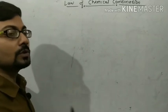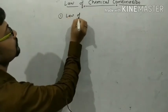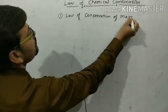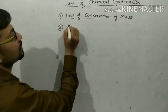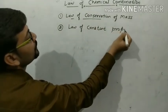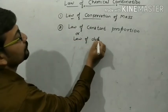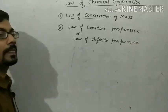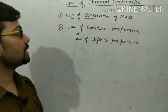So, what is the law of chemical combination? According to your syllabus, there are two laws under the law of chemical combination. The first one is the Law of Conservation of Mass, and the second law is the Law of Constant Proportion.